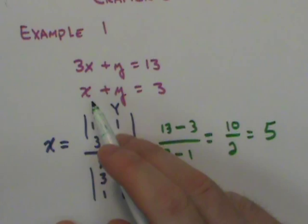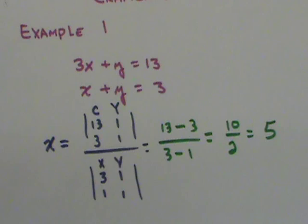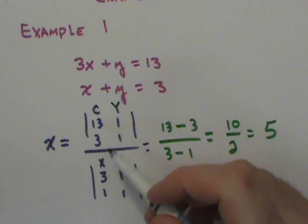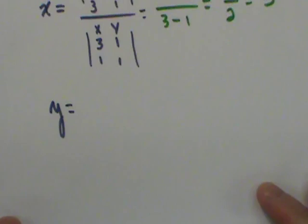From here, I can either take the 5 and plug it in for the x and then figure out what y is going to be, or I can set up another set of determinants for the y variable. Now if I do that, I'll run through that process, it would look like this.